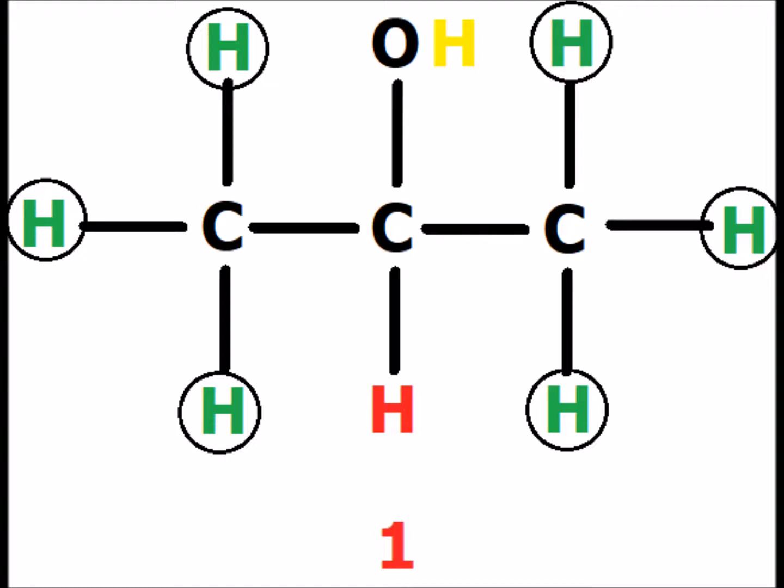The red hydrogen has six neighbors — all of the green methyl hydrogens, but not the hydroxyl hydrogen shown in yellow. Therefore, this signal will be split into seven sub-peaks, showing that it has six neighbors.